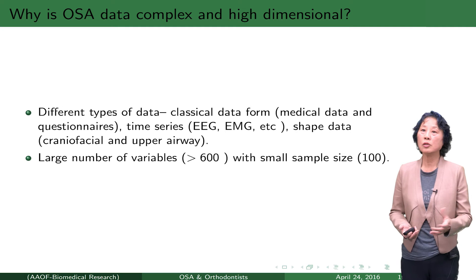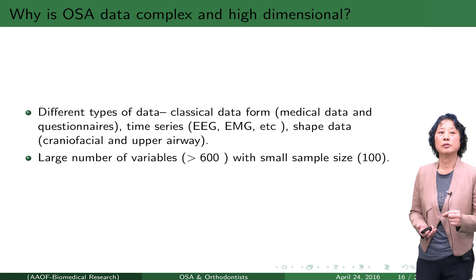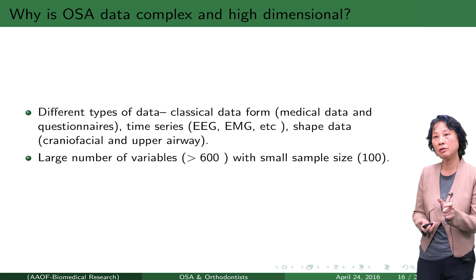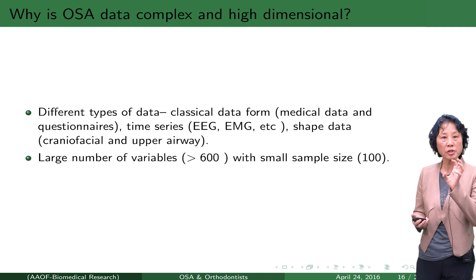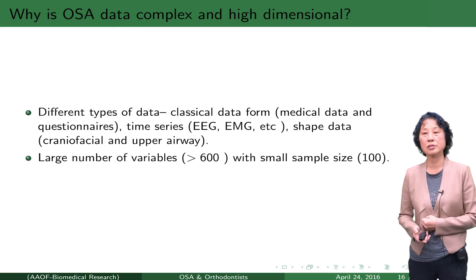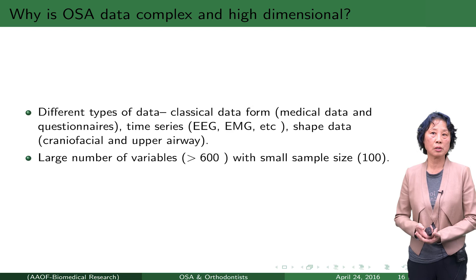Why do I say high-dimensional? Recruiting patients is very difficult; I am aiming for 100, which takes a long time. But the variables I'm measuring could be way more than 600. In classical statistics, the number of variables is usually much smaller than the sample size. Here it is the opposite — the sample size is way smaller than the number of variables. That's why we call this high-dimensional data analysis, and conventional statistical methods or machine learning methods in computing science are not going to work.